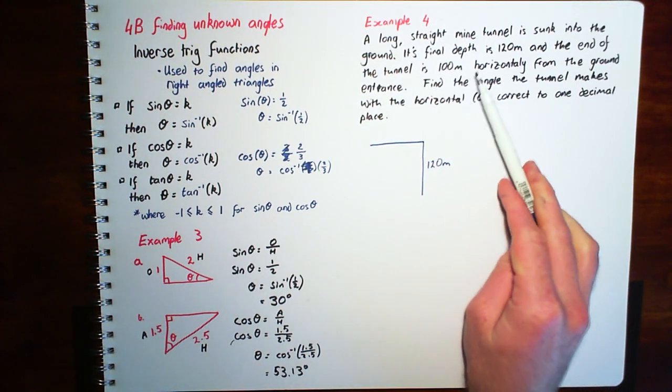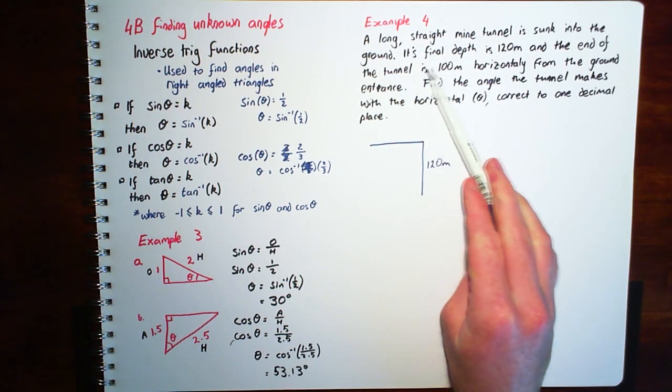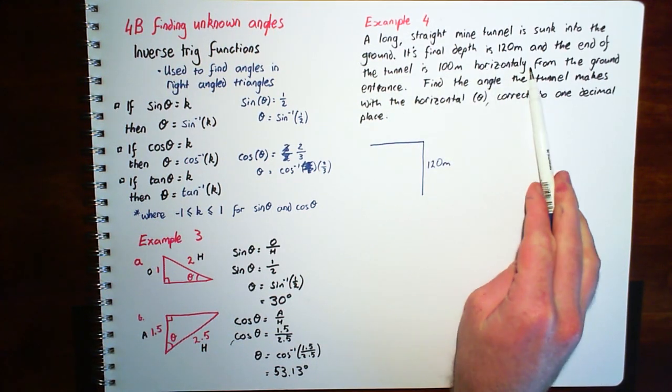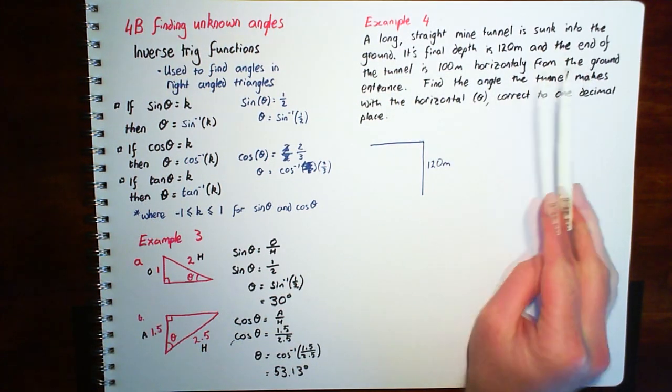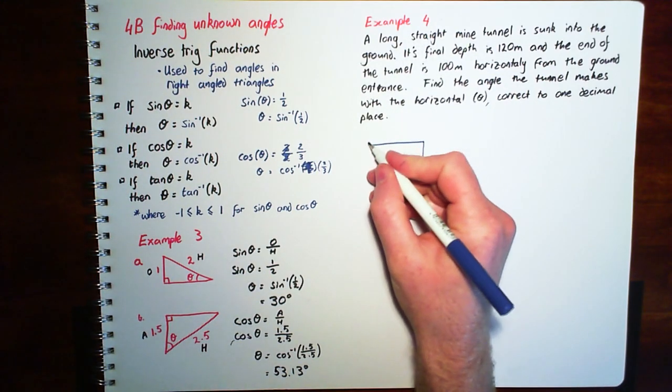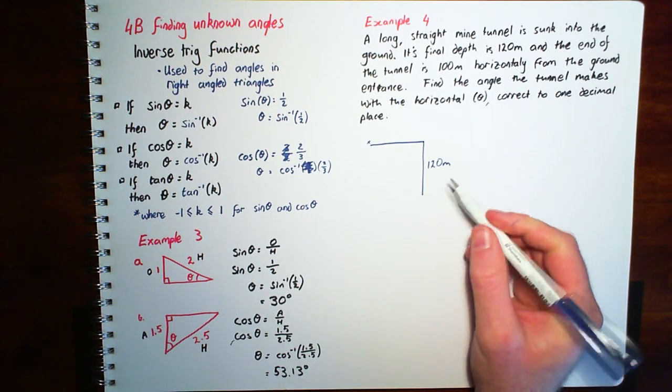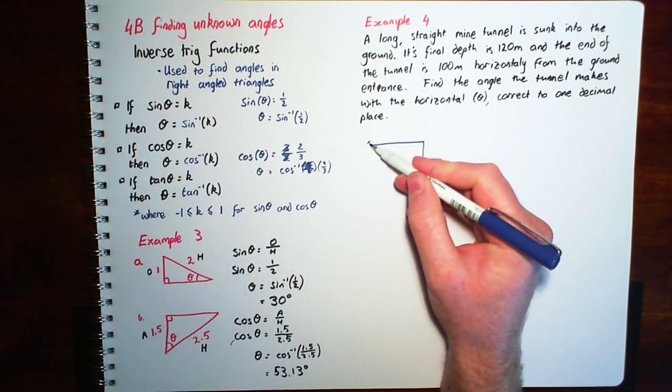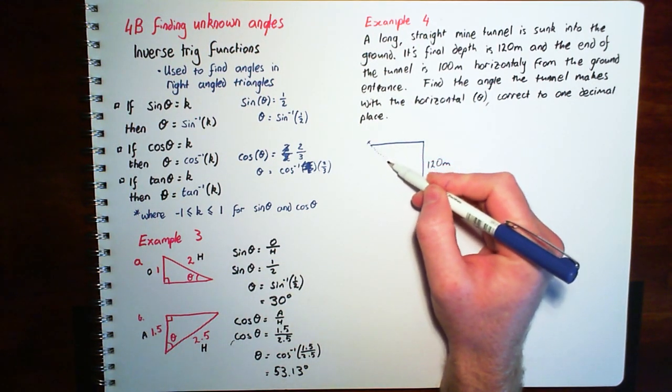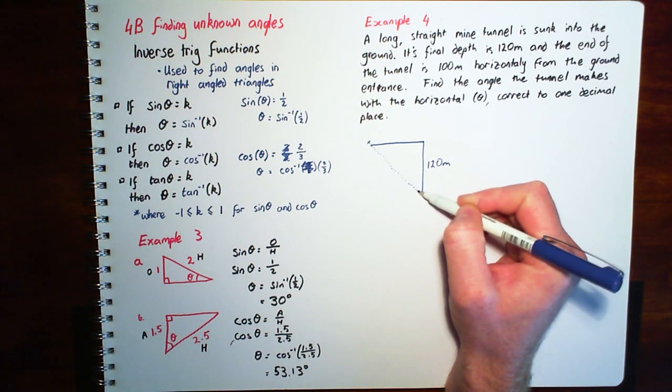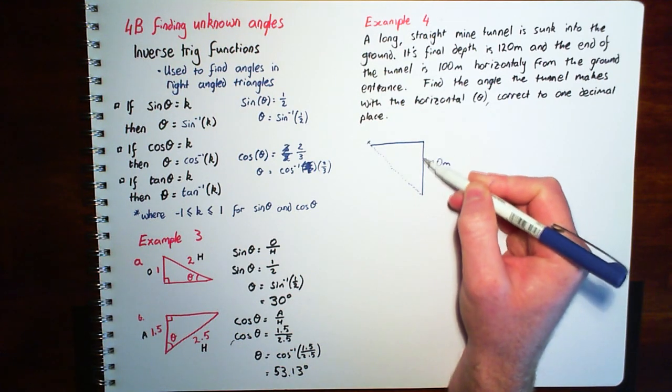Now it says the tunnel is 100 metres horizontally from the ground. So from where it started. So if we started at this little point here, and basically from there they've dug a tunnel all the way down and it's 120 metres deep.